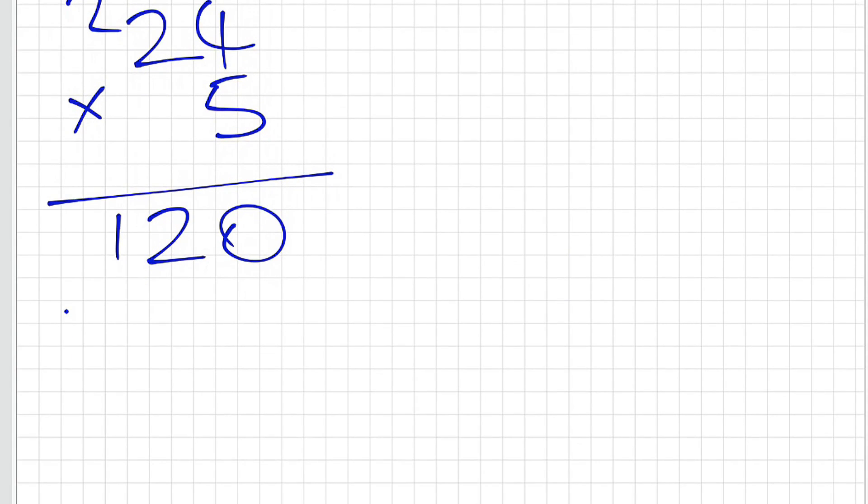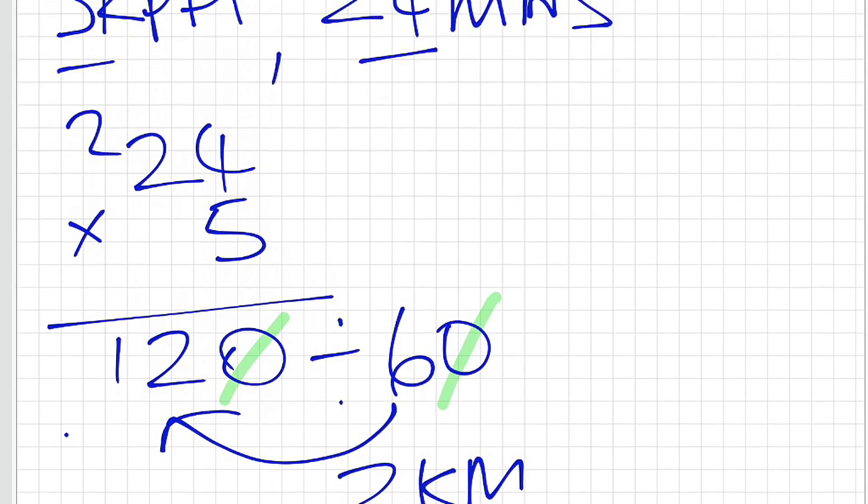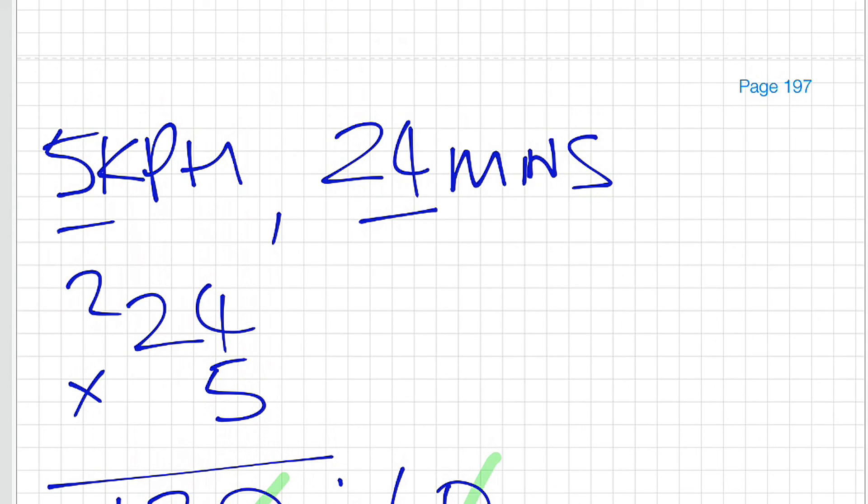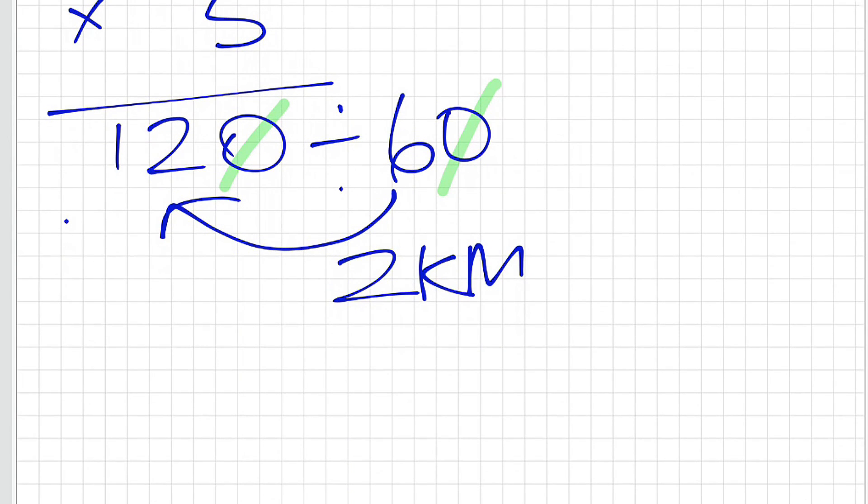We started with minutes, we're still working in minutes. If it was hours, we'd be finished. But because it's in minutes, we need to divide by 60. We can cross off those last two zeros and we still have the same proportionate equation. I need to know how many times will 6 go into 12, and we know that's going to happen twice. 2 now becomes my answer in kilometres. At 5 kilometres per hour, if you did that for 24 minutes, the distance would be equal to 2 kilometres.